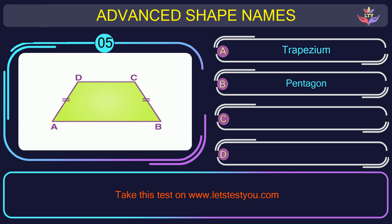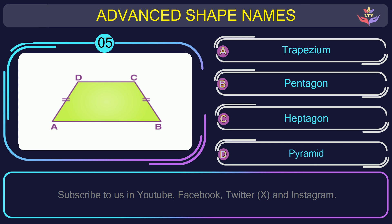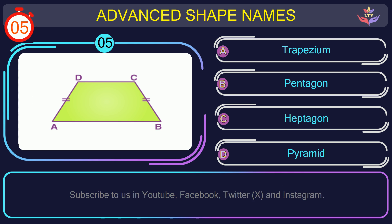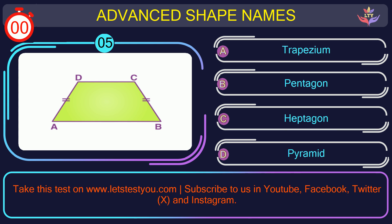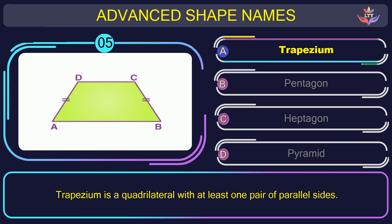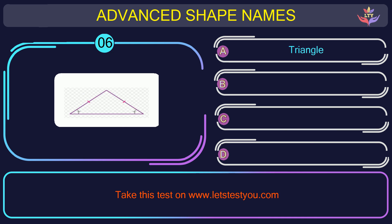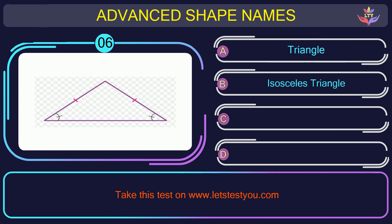Question number five. Could you recognize the name of the shape in this picture? The correct answer is option A. Trapezium. Trapezium is a quadrilateral with at least one pair of parallel sides.